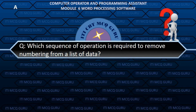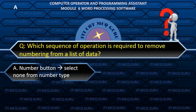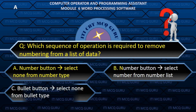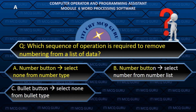Which sequence of operations is required to remove numbering from a list of data? A. Number button, select none from number type.